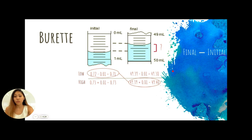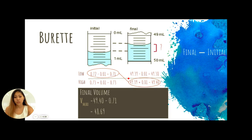So you could calculate this final minus initial by using the maximum value of the final, subtract the minimum value of the initial. So doing a crisscross. And you get 49.4 minus 0.71. This gives us 48.69. You could do the minimum of the final minus the maximum of the initial to get our second value, which is 49.38 minus 0.73. And this gives us 48.65.